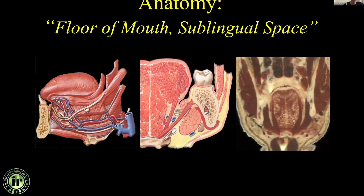Glossus is Greek for tongue, which is used for the muscles. The anatomy here includes: the mylohyoid muscle, the sublingual gland, Wharton's duct (which is the duct for the submandibular gland), the lingual nerve, the hypoglossal nerve, the hyoglossus muscle, and the lingual artery. These are all components of the sublingual space.